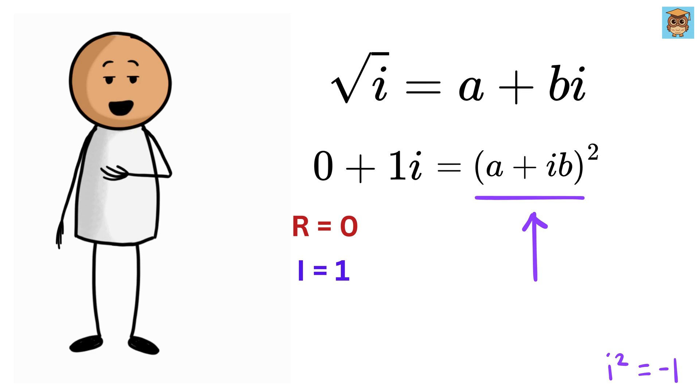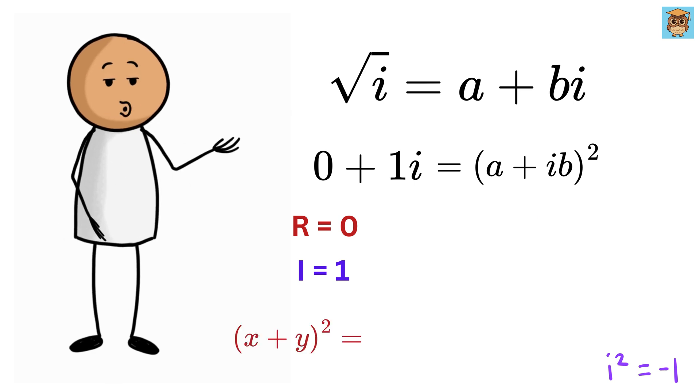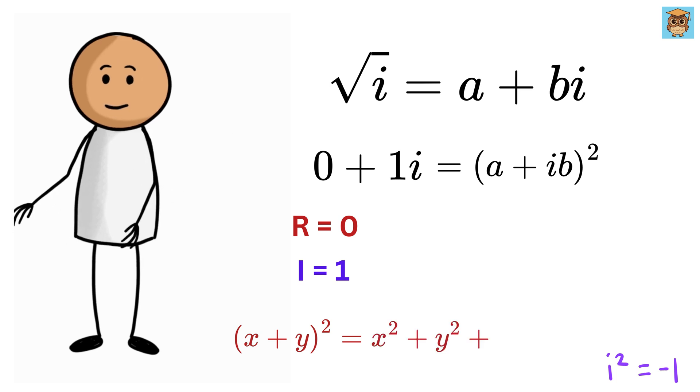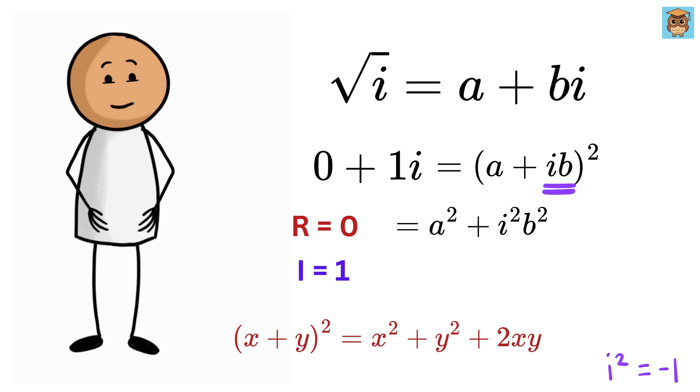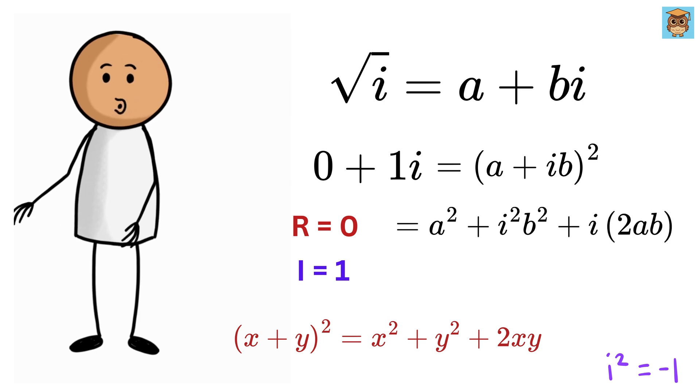Now, this right-hand side, we can use (x + y)² formula, which is x² + y² + 2xy. If we take x as a and y as ib, then put it here to get a² + i²b² + 2abi.